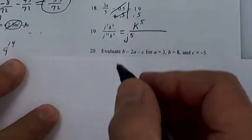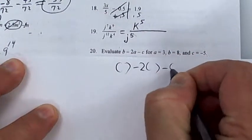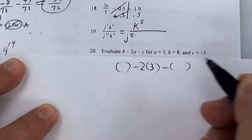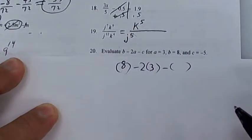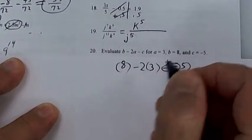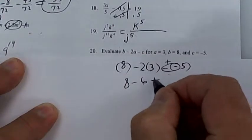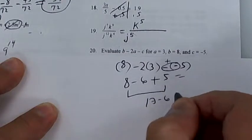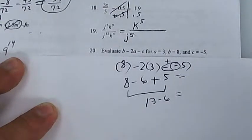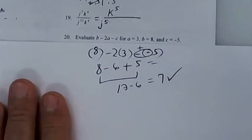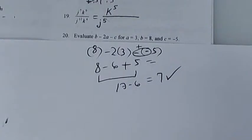Number 20 is similar to what we did: put parentheses, then −2 times (a − c). Different numbers this time: a is 3, b is 8, c is negative 5. You get a plus here, so 8 minus 6 plus 5. 8 and 6 is 14 — wait, 13 minus 6 gives 7.